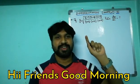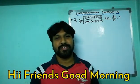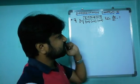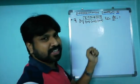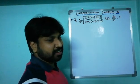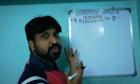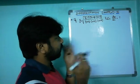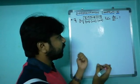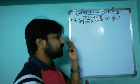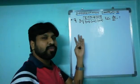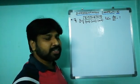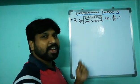Hi friends, good morning, welcome to my channel Value Master. Today I'm going to discuss shortcut number 10 on differentiation. The question is: if y equals the square root of (x−1)(x−2)(x+3) divided by (x+4)(x+5)(x+6), then what is dy/dx? This kind of lengthy and complicated question also has a shortcut formulation.